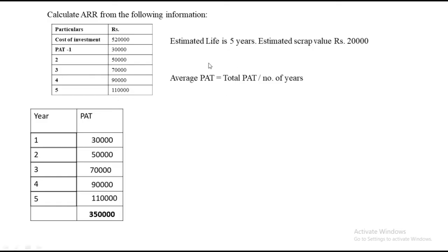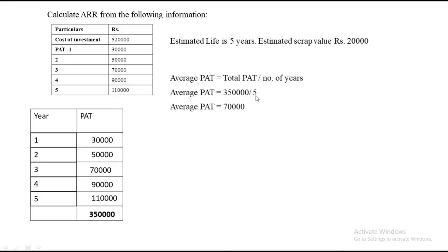Next, we need to find the average profit after tax, which is the numerator in our main formula. The formula is total PAT divided by number of years. We already found total PAT is 3,50,000, and the number of years is 5. So 3,50,000 divided by 5 gives us 70,000 rupees — that is our average PAT.